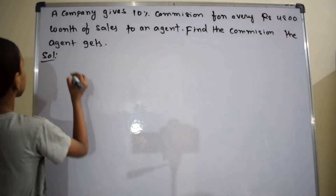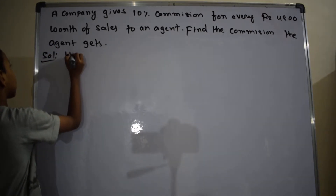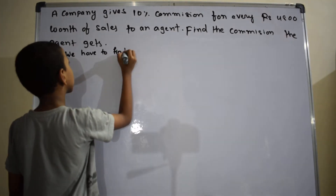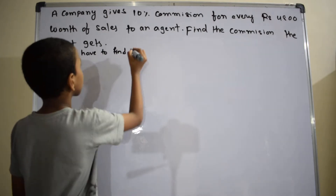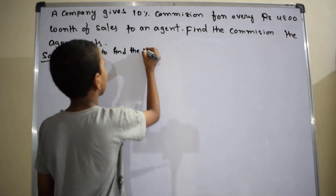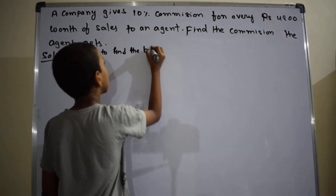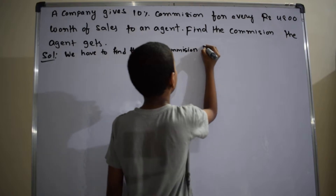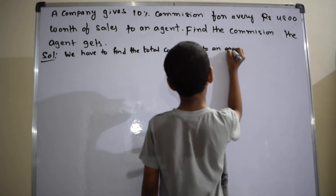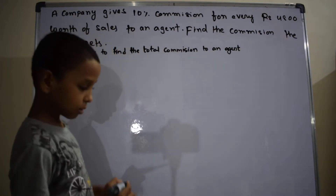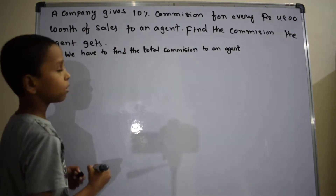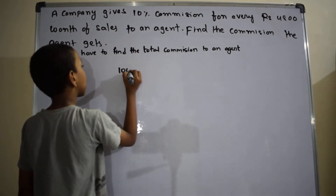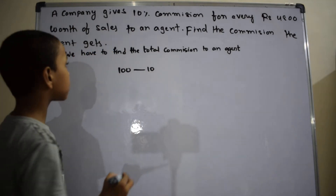We have to find the total commission of an agent. There is a simple logic: for every 100 rupees, the commission is 10 rupees. So for 4,800 rupees, how much commission does the agent get?